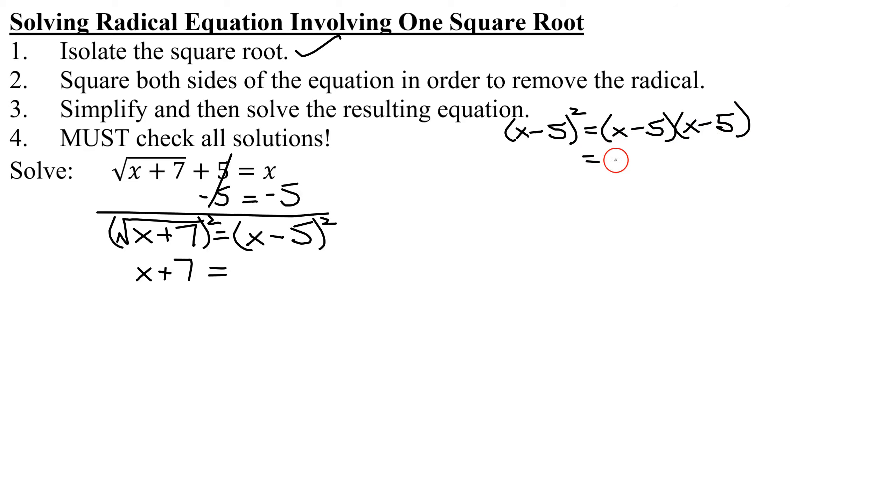So first, x times x is x squared. Outer, x times negative 5 is negative 5x. Inner, negative 5 times x is negative 5x. And last, negative 5 times negative 5 is positive 25.